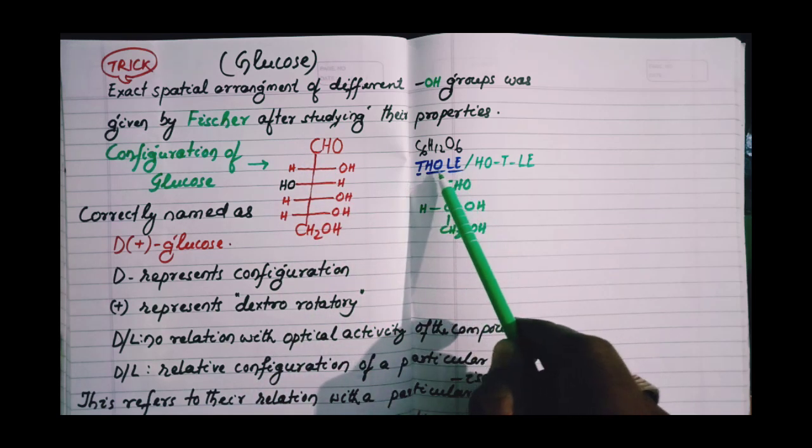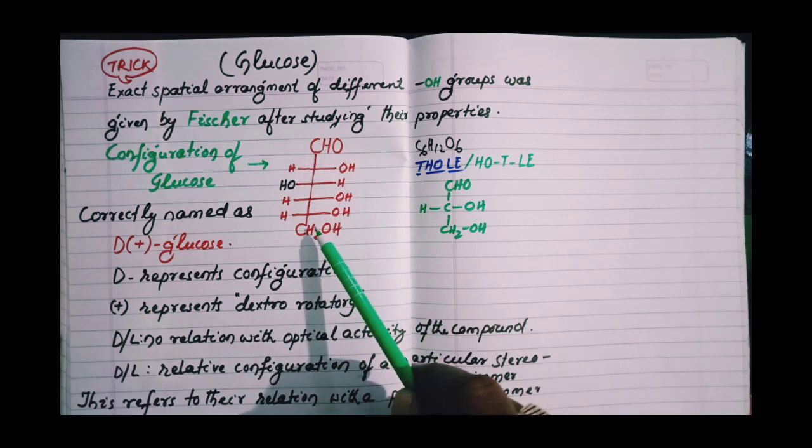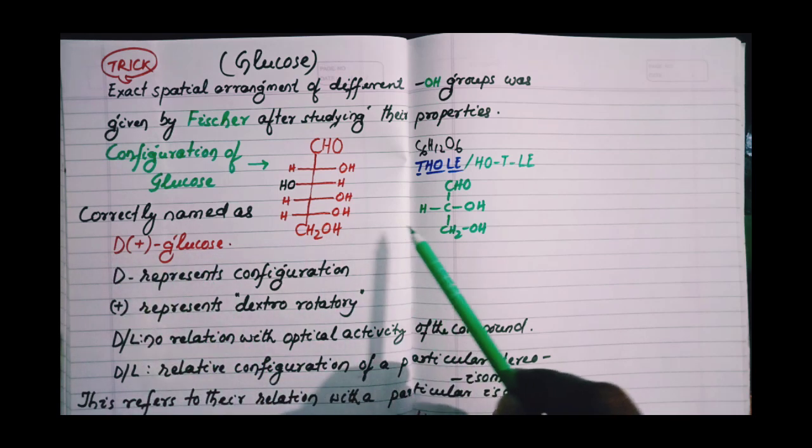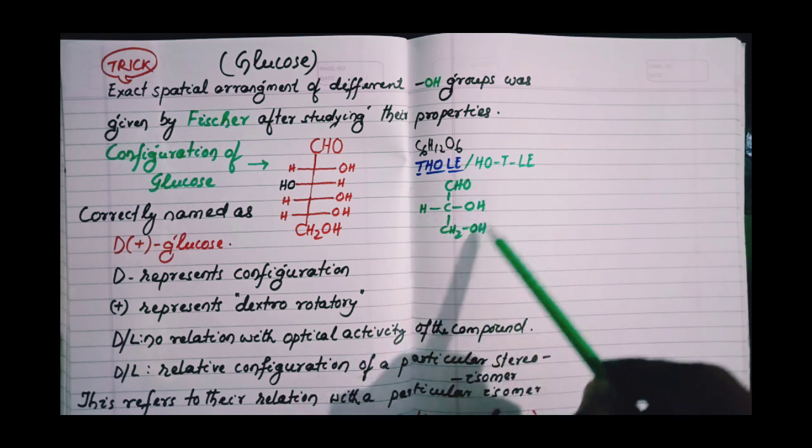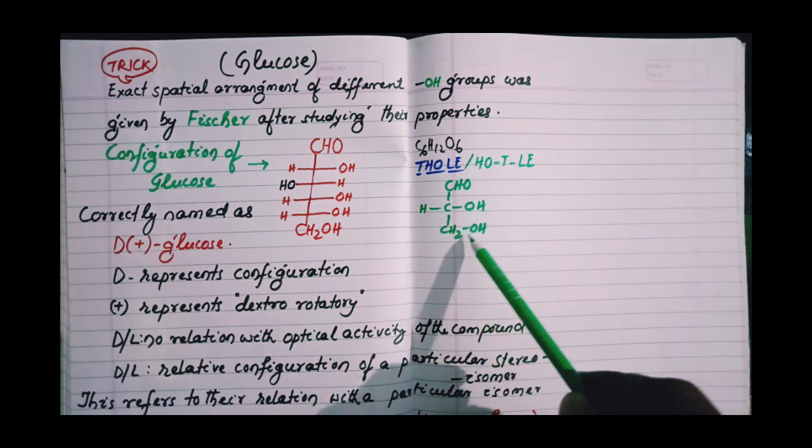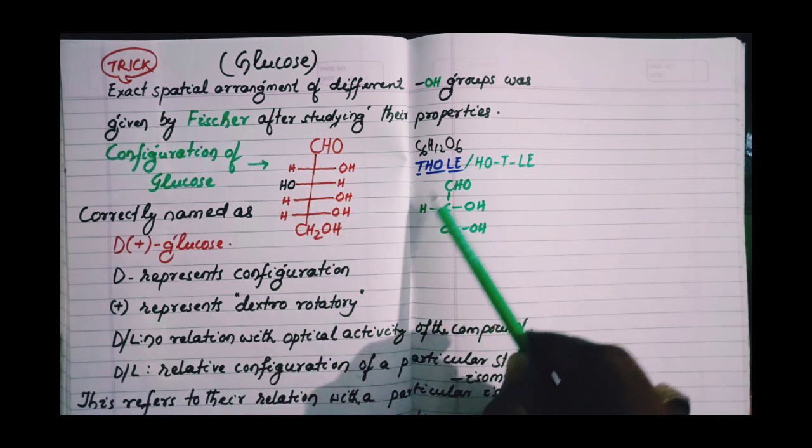The 3rd HO is on the left side, and this glucose is correctly named as D-plus glucose. This D is from D-glyceraldehyde. This part HCOH-CH2OH is same as that in glucose HCOH-CH2OH, so from D-glyceraldehyde.